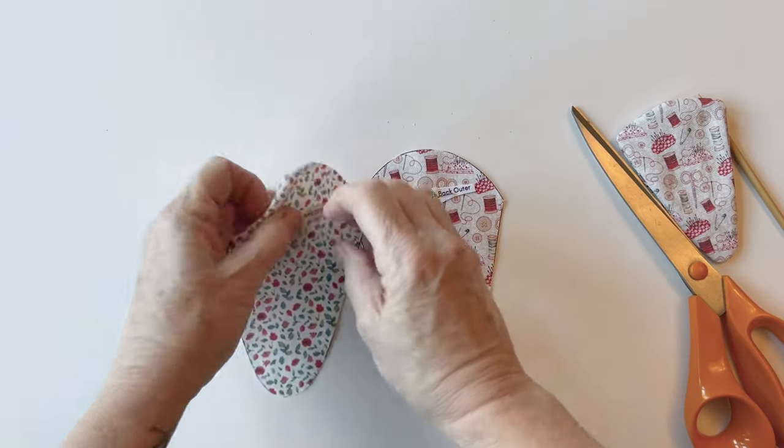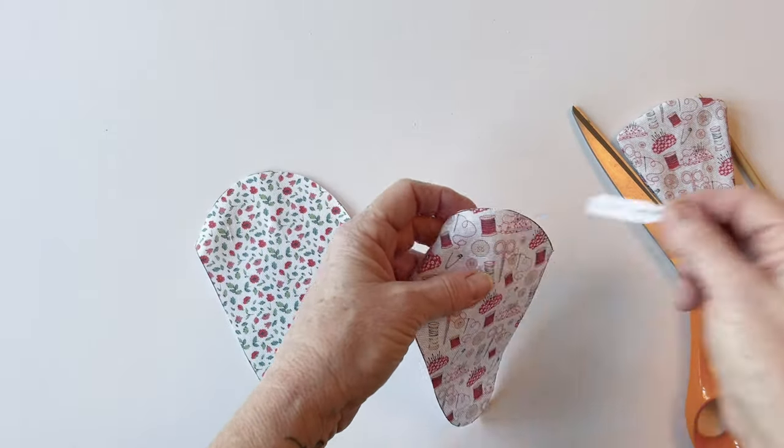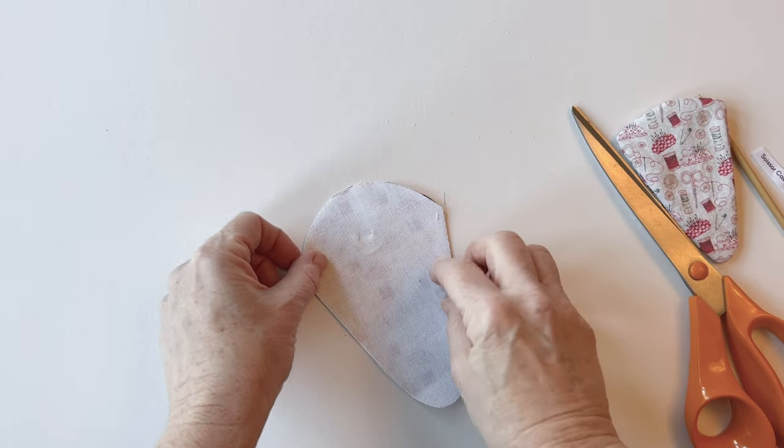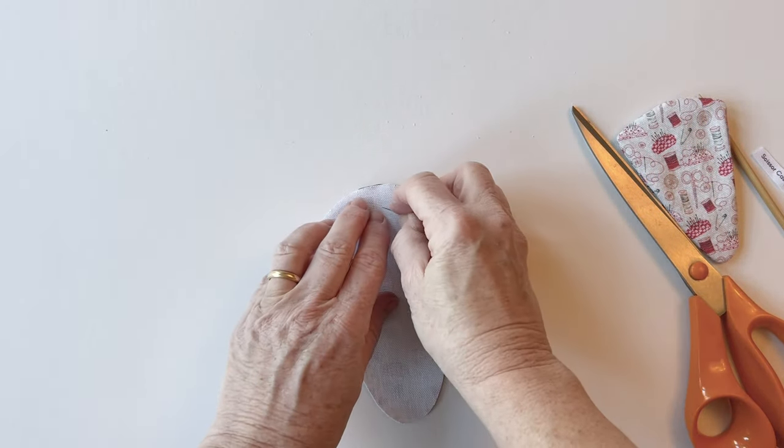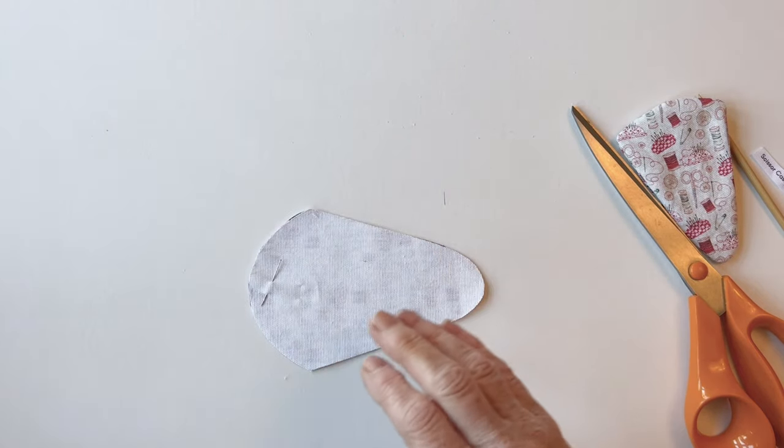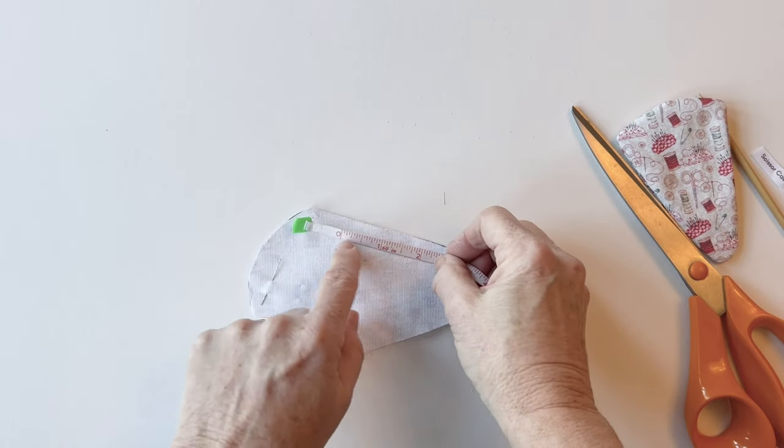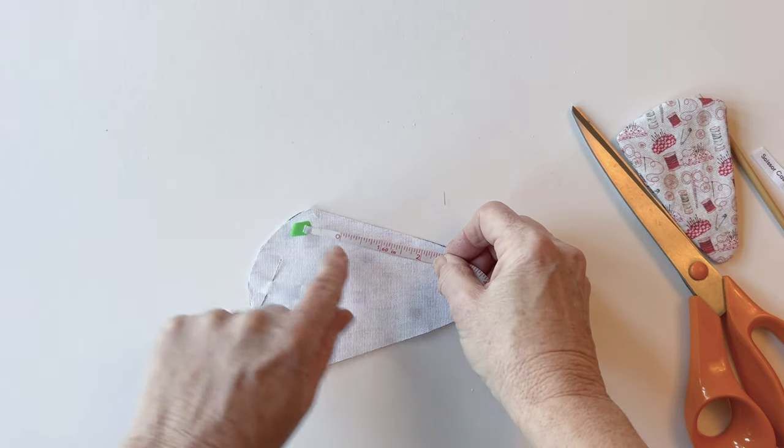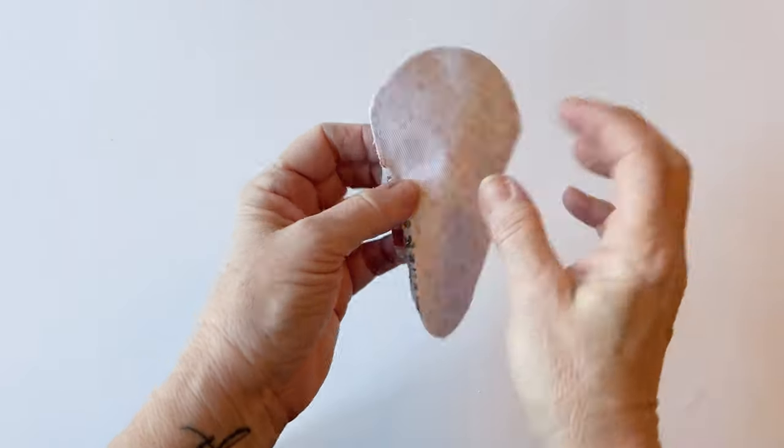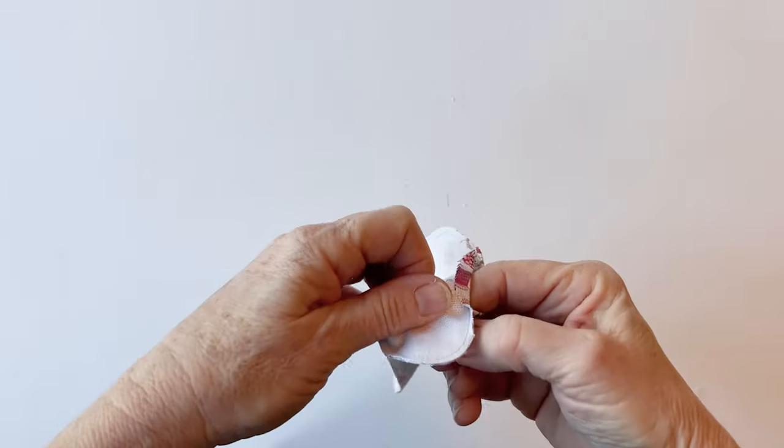Now to make the case back, this is done in exactly the same way. Take the case back outer and the case back lining and place them right sides facing. Pin together all the way around. Measure and mark the turning gap in the center of one straight side, and then sew together all the way around.